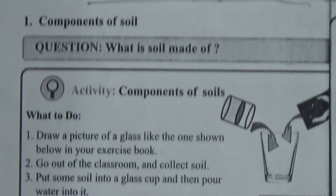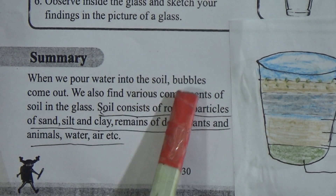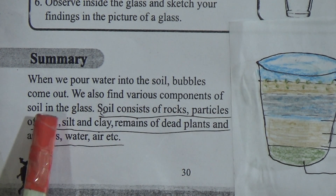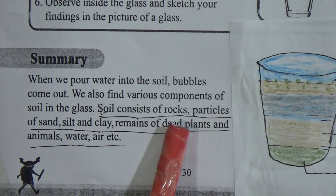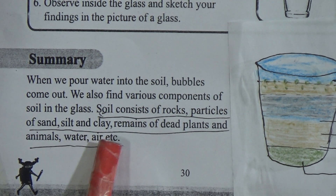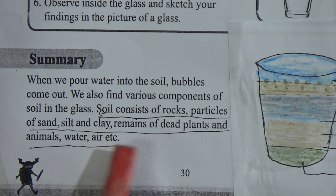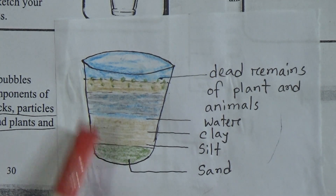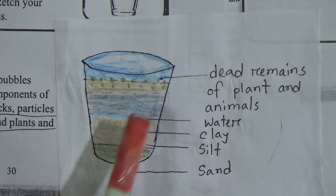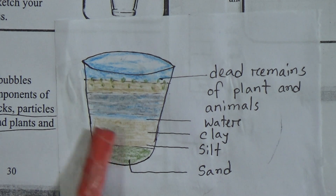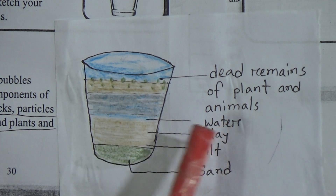Now, components of soil. We will discuss the components of soil. When we pour water into the soil, bubbles come out. We also find various components of soil in the glass. Soil consists of rock particles of sand, silt, and clay; remains of dead plants and animals; water; air; etc. Here, see this figure — this is a glass of water with soil showing the different components.